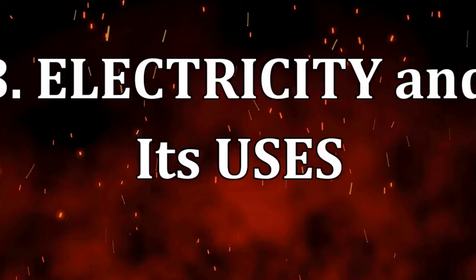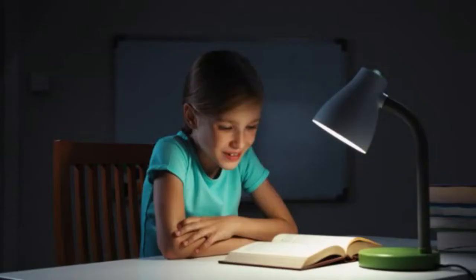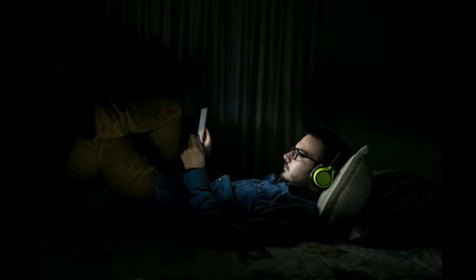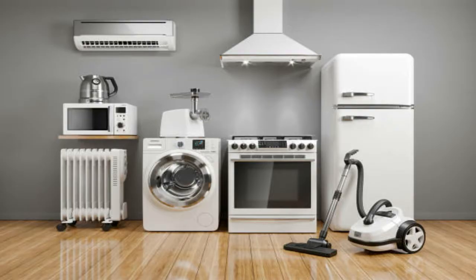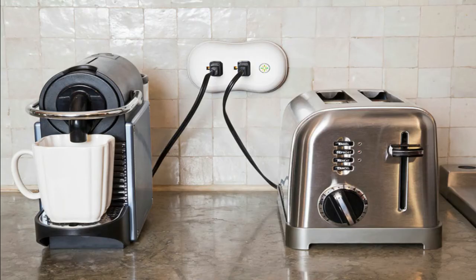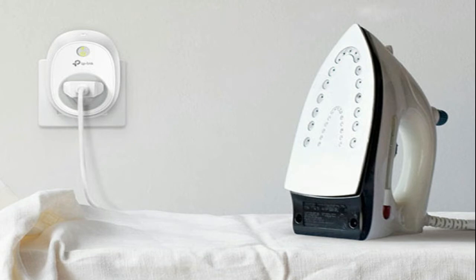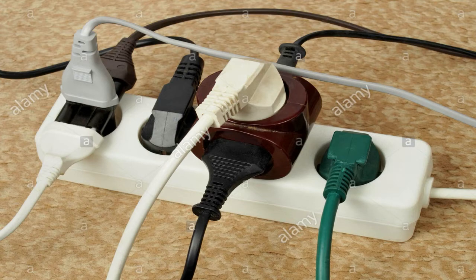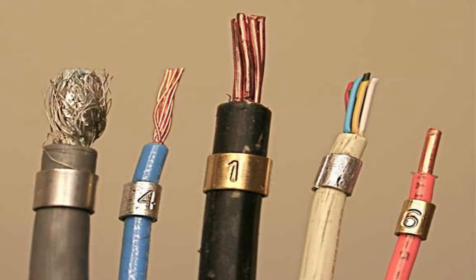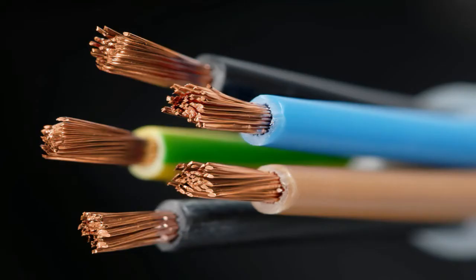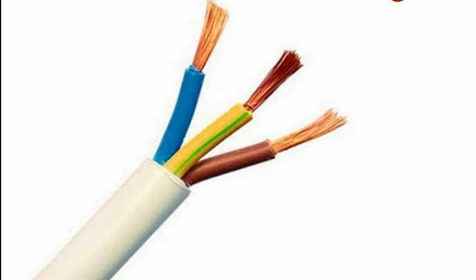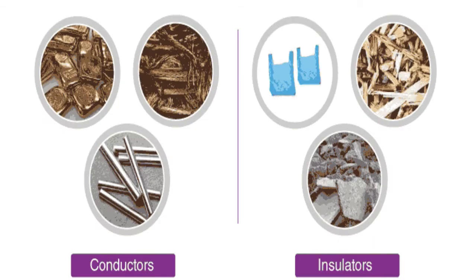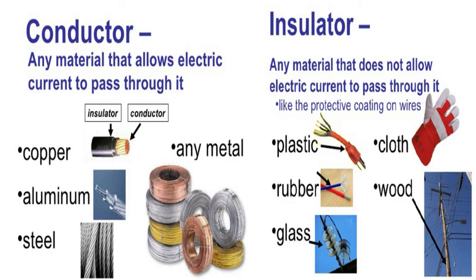Electricity and its uses: electricity helps us to read at night or use the computer. It also enables us to watch television and use other appliances in our home. If you notice, the electric cord connected to any electrical device has metal wires covered with rubber or thick plastic. Metal wires are good conductors of electricity, while rubber or thick plastic is a good insulator. Conductors are materials that allow electricity to pass through, while insulators are materials that do not allow electricity to pass through them.